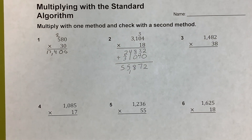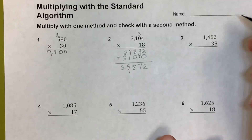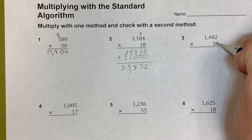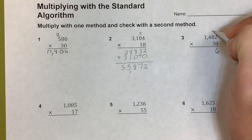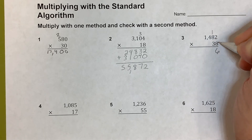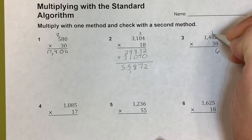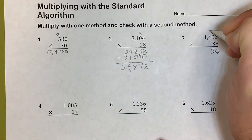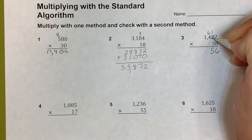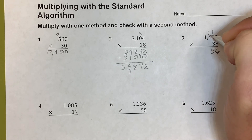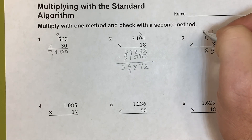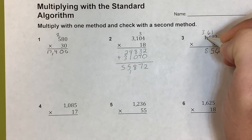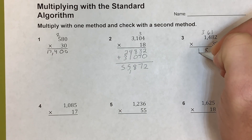Next I'll do another problem in standard algorithm and then show it in the area model. Starting with 8: 8 times 2 is 16, carry my 1. 8 times 8 is 64 plus 1 is 65, carry my 6. 8 times 4 is 32, plus 6 is 38 — write 8, carry my 3. 8 times 1 is 8 plus 3 is 11.